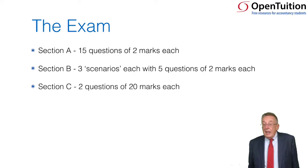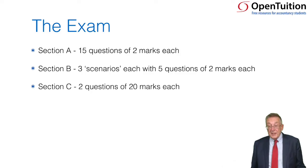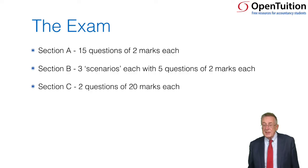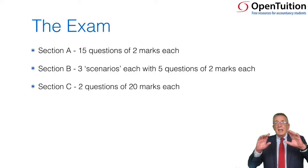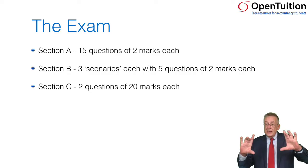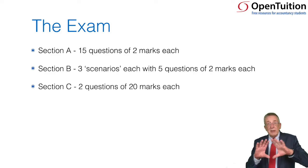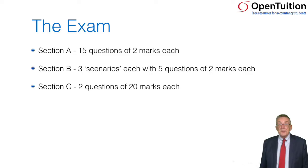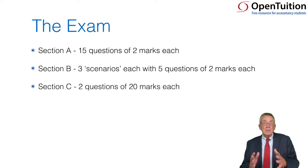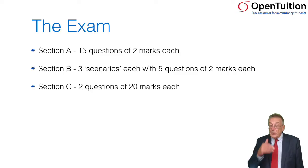The exam has three sections. Section A has 15 short questions each carrying two marks — some are calculations, others ask which of the following statements are true. Section B also has two-mark questions but presents three scenarios, each with five questions based on the same information. Section C has two long-form questions that can be split into parts, with some parts involving arithmetic and others involving writing. There are 100 marks in total.